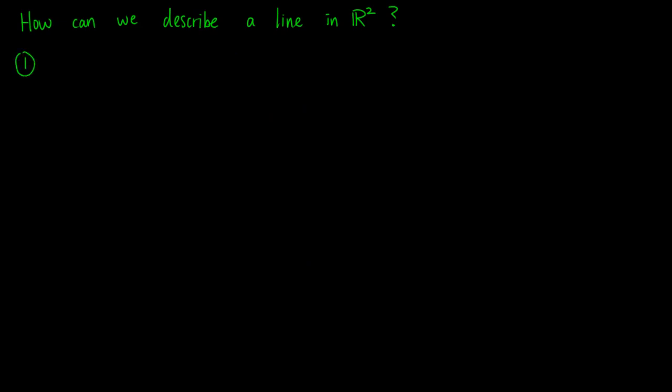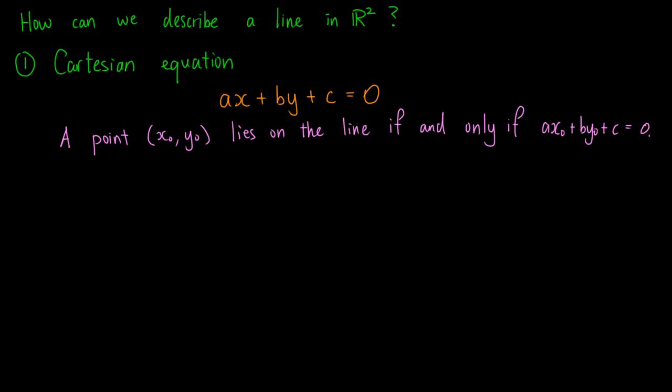Now, we try to describe a line in R². The first way that we can use is by means of a Cartesian equation, which we have learnt in high school. It takes the form ax + by + c = 0. In this case, a point, let's say (x₀,y₀), lies on the line if and only if the equation is satisfied.